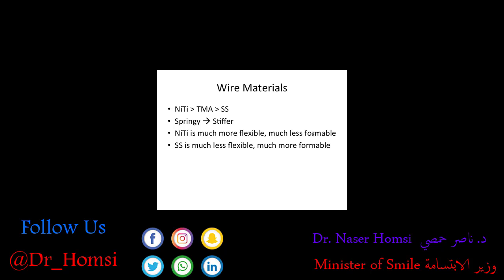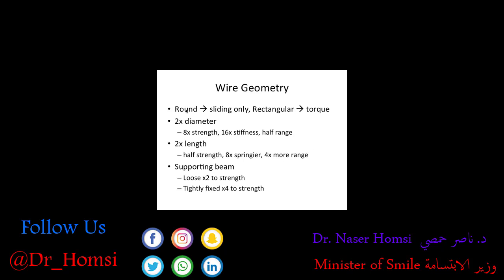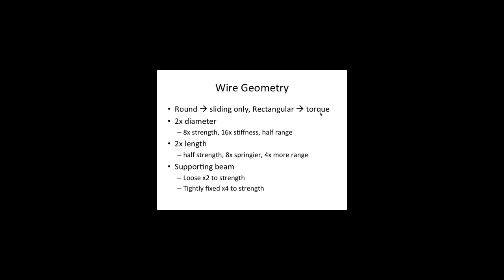NiTi can't be formed as easily — if you want to change its shape, it won't listen to you. Stainless steel responds to bends much better. For geometry: a round wire slides through brackets, whereas a rectangular wire in a rectangular bracket slot enables you to apply torque. If you double the diameter, you increase strength, increase stiffness, and halve the range of action. If you increase the length of something, you decrease strength, increase springiness, and increase range. Thickening a wire makes it stronger and stiffer; lengthening it gives more range of flexibility.